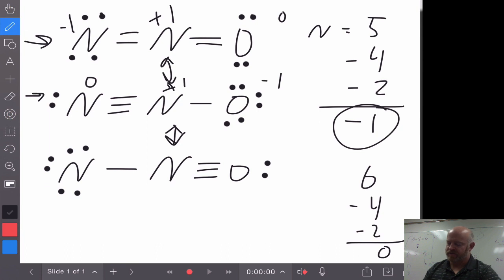For the second one, we get a zero, plus one, and a minus one. So right now, those two are equal. Neither one of those two are preferred over the other ones.